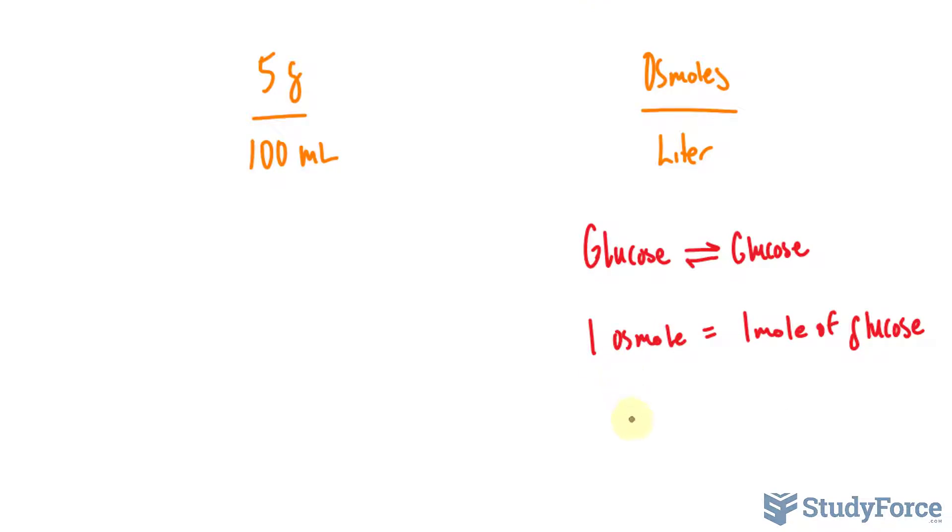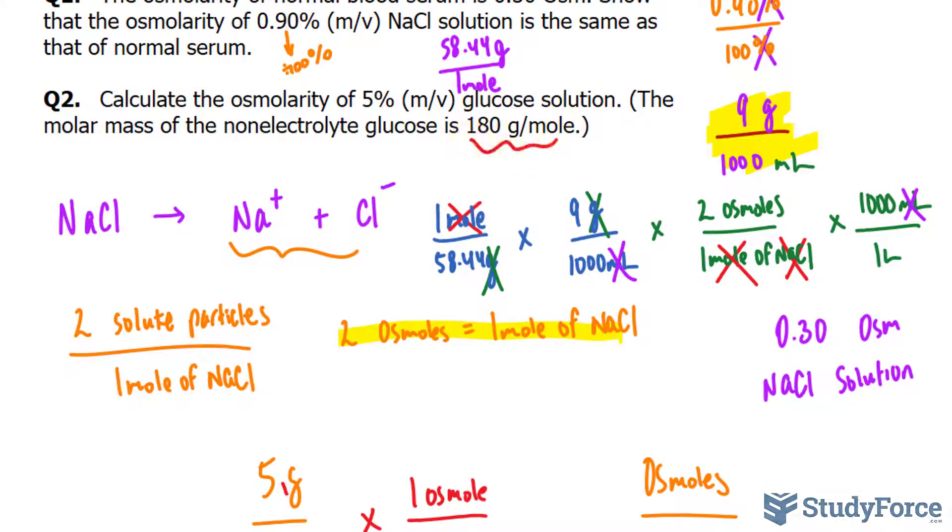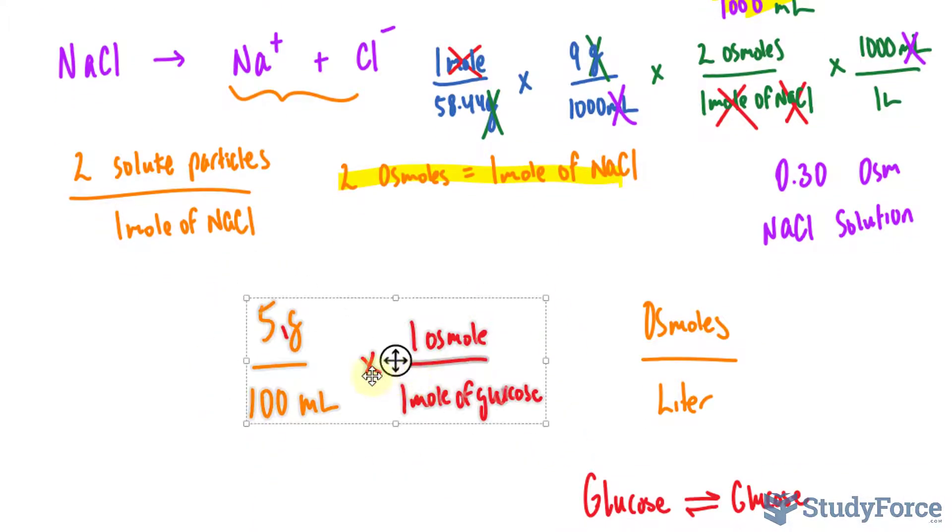Essentially, we'll say that 1 osmol equals 1 mole of glucose. So we'll use this as a conversion factor. We'll say 1 osmol over 1 mole of glucose. And we'll use this conversion factor to eventually get osmoles per liter. And we want osmoles at the top, so I will multiply this fraction by 1 osmol per 1 mole of glucose. And if we were to multiply this out right now, we wouldn't get the units osmoles per liter. We would get grams times osmoles over milliliters times 1 mole of glucose.